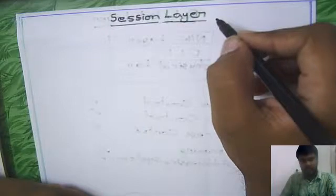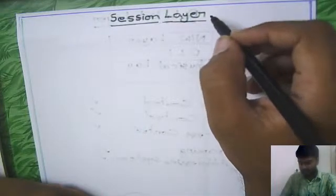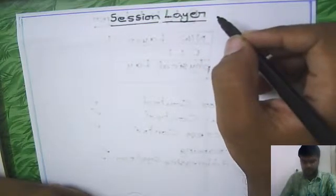Hello friends. The next layer is the session layer. This layer will exist only when there is a connection-oriented situation. When there is a connection, this layer is going to work — it is going to maintain the sessions between the two systems. The session layer allows users on different machines to establish sessions between them.